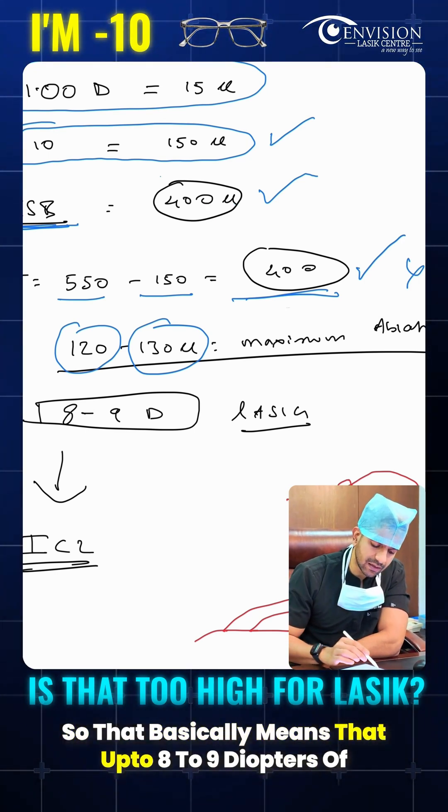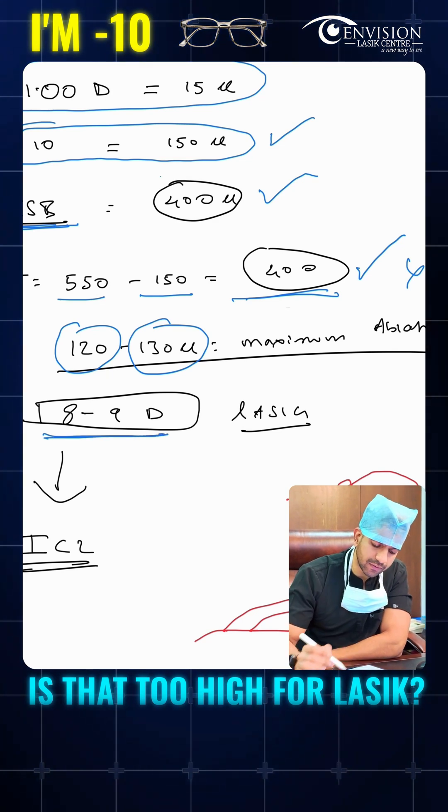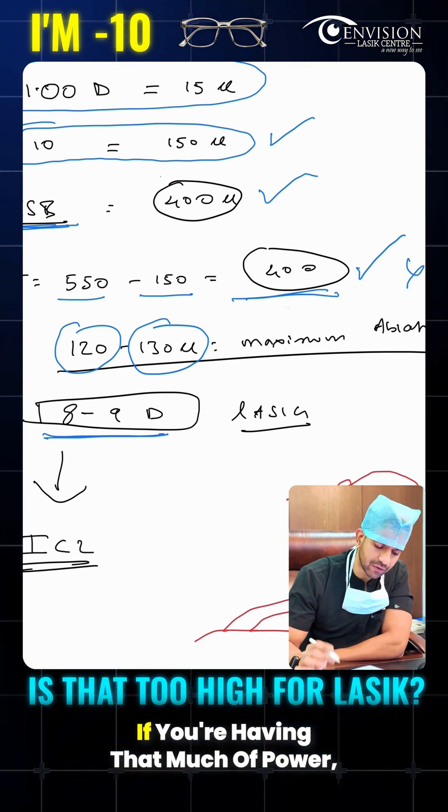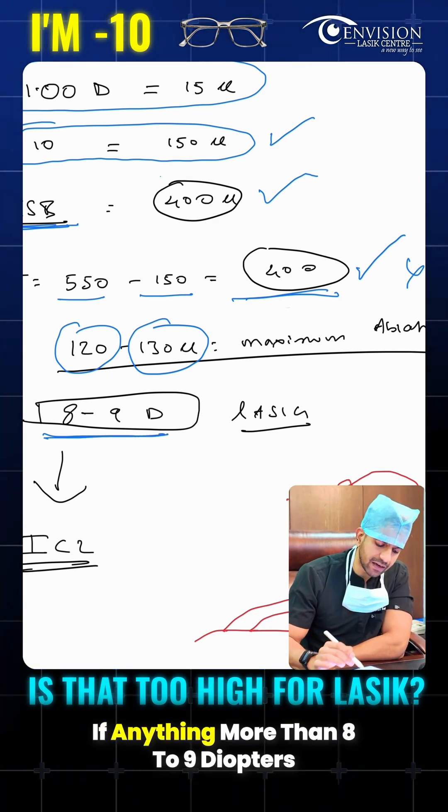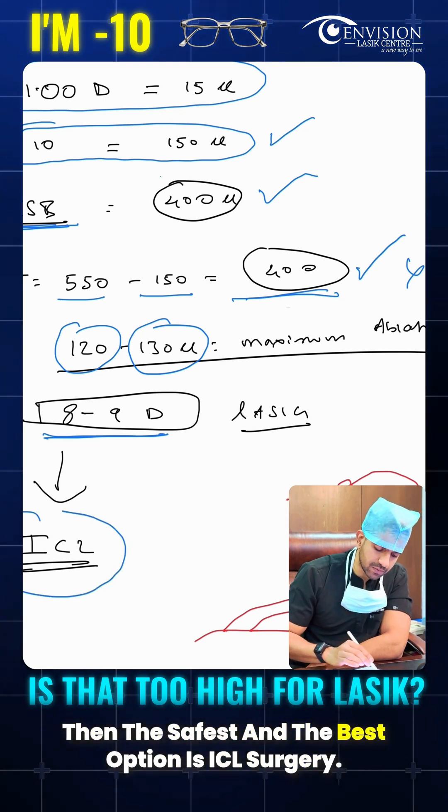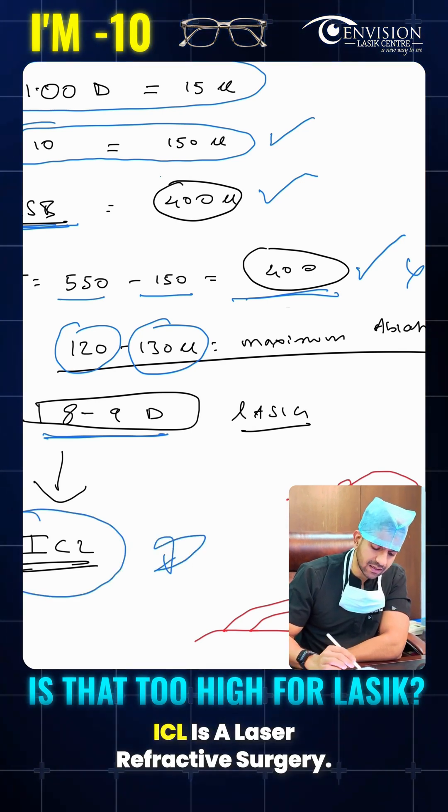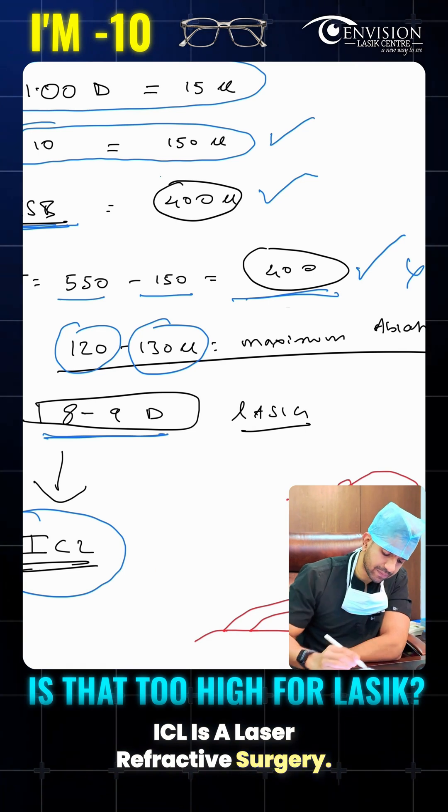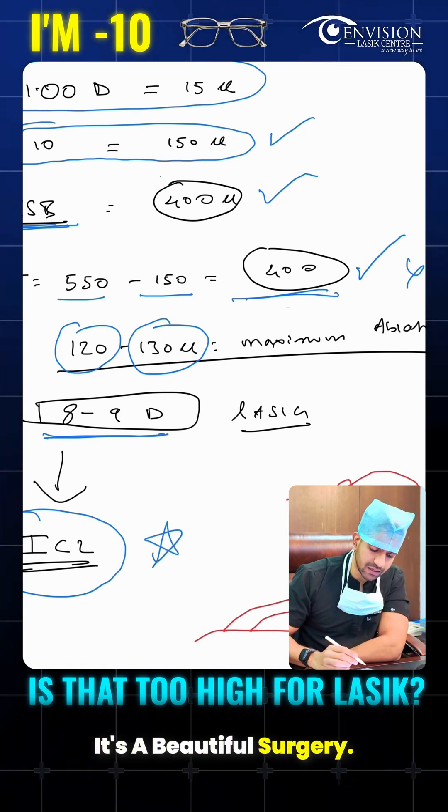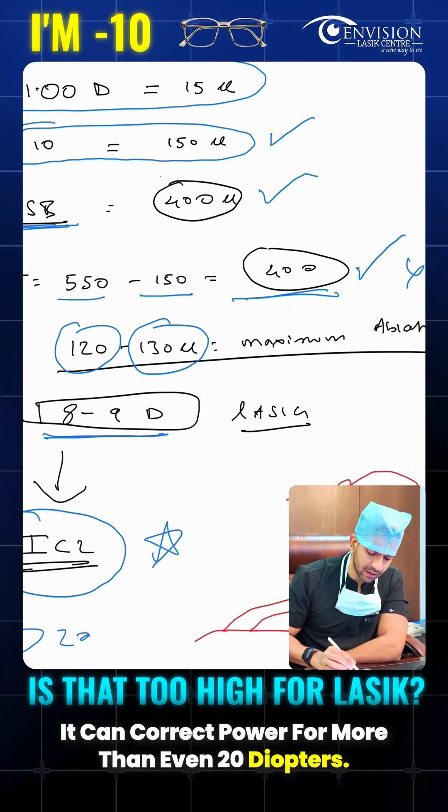So that basically means that up to 8 to 9 diopters of laser refractive correction can be done if you're having that much of power. If anything more than 8 to 9 diopters, then the safest and best option is ICL surgery. ICL is a laser refractive surgery. It's a beautiful surgery. It can correct power for more than even 20 diopters.